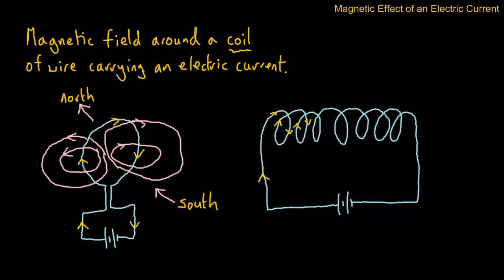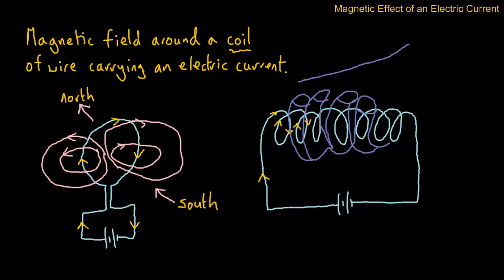So we grip the coil in the direction of the conventional current with our right hand, so our fingers will be curled up like this. Our fingers wrap around, and our thumb would then be pointing in that direction. The thumb points towards the north, so we can say this would be the north end.